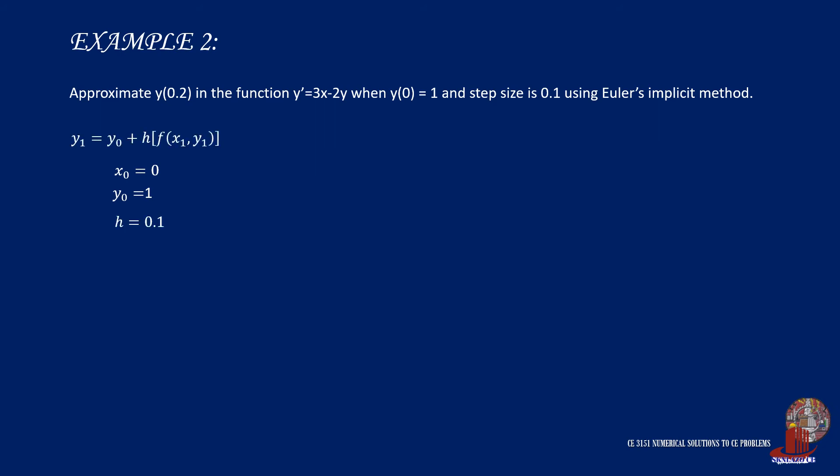So using the formula of Euler's implicit method, we would need to integrate the original equation of 3x - 2y. Thus, the modified equation will be y1 = y0 + h times the function of (3x1 - 2y1).